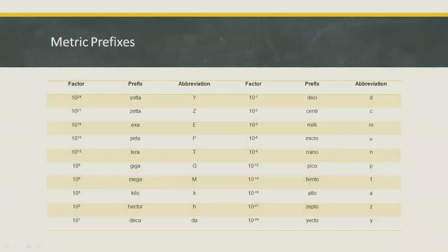As we can see, in the first column are the factors of 10. The second column shows the equivalent prefix, and the third column is the abbreviation used to express the value. It is useful to express very large or very small quantities.